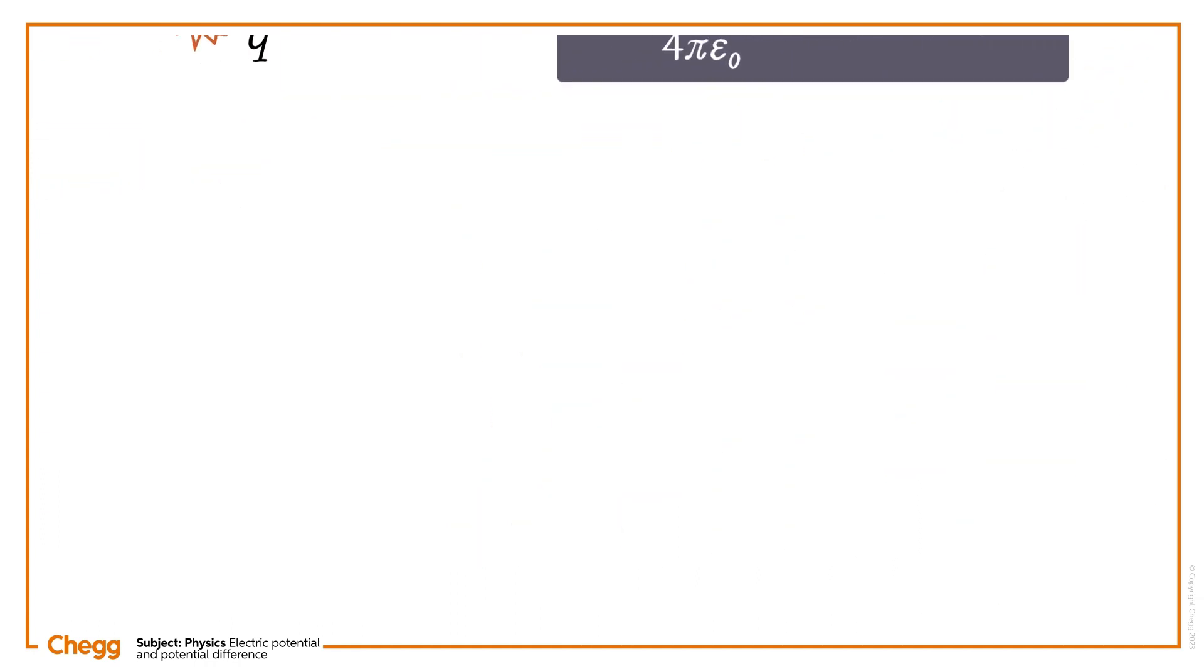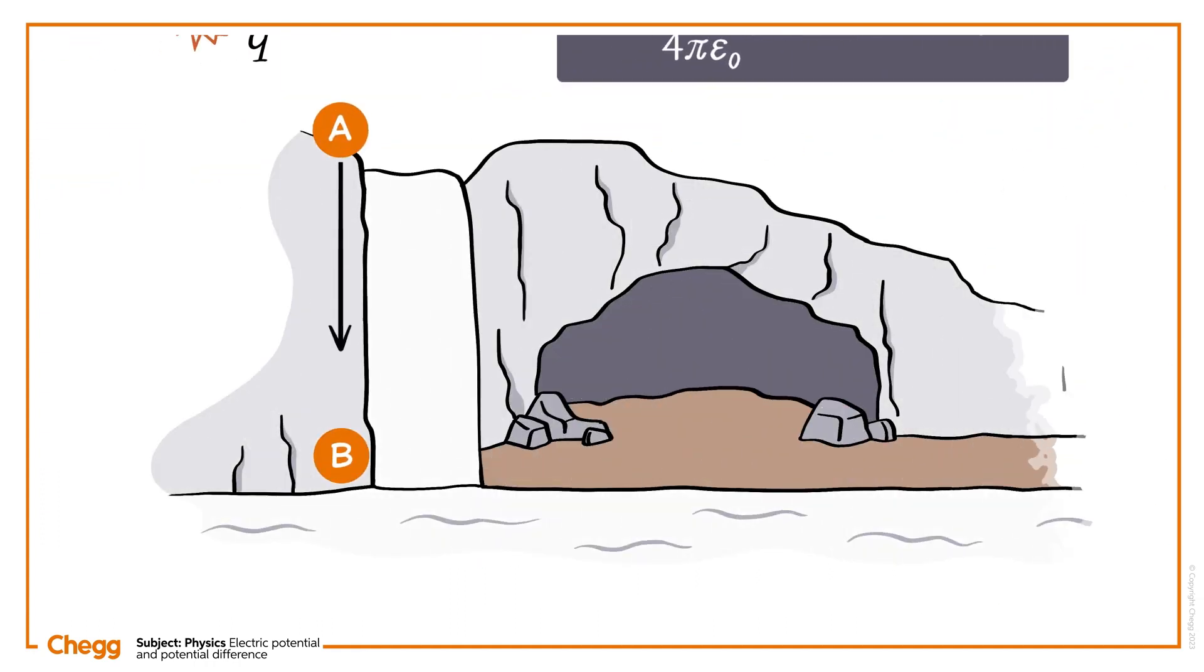A potential difference between two points causes movement from one point to another. It's just like a waterfall, where water flows from a higher gravitational potential to a lower one. Similarly, potential difference, or voltage, moves charges around a circuit, resulting in an electric current.